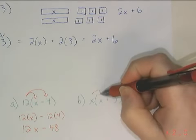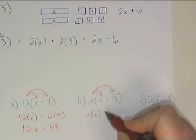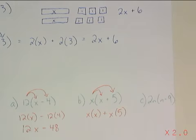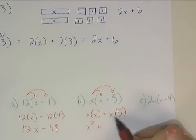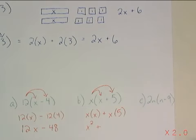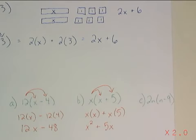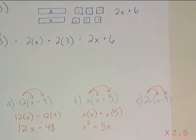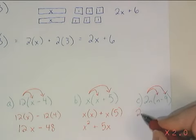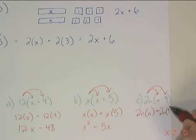For letter b, notice I'm still drawing in all of my arrows and rewriting it, just to make sure I don't leave anything out. x multiplied by itself is x squared. x multiplied by 5 — a letter and a number multiplied together — we know that coefficient has to come first. So we get 5x. Last but not least in this set of examples, 2n multiplied by n, and I copy down my minus, 2n times 9.